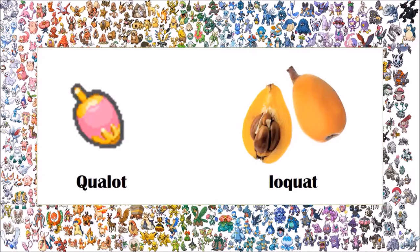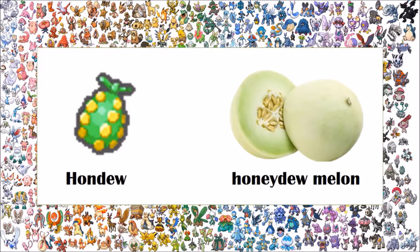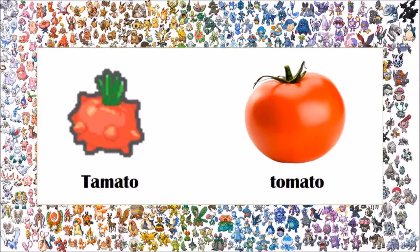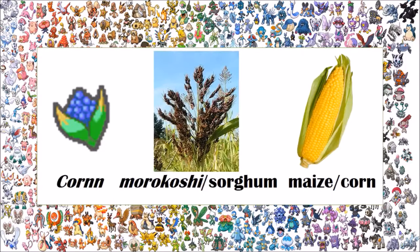The Qualot berry is based on the loquat. The Hondew berry is based on the honeydew melon. The Grepa berry is based on the grape. The Tomato berry is based on the tomato. The Cornn berry, while obvious, has many different inspirations — in Japan it is based on the morokoshi, which may be a type of sorghum. It is difficult to determine exactly where the names come from because there are many different species of grain that can fit this category. In English, it is obviously based on maize or corn, though whether maize and corn are even the same thing is something the internet can't seem to agree on.